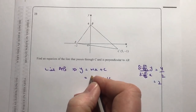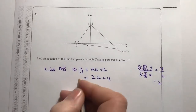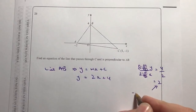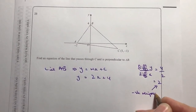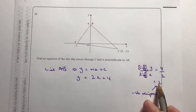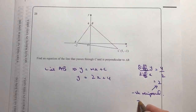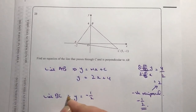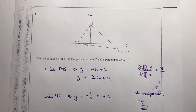So line AB can be written as y equals 2x plus 4. Now, for a line perpendicular to AB, we need the negative reciprocal of the gradient. The gradient of AB is 2, so the negative reciprocal is minus a half. This means line BC has the form y equals minus a half times x plus c.